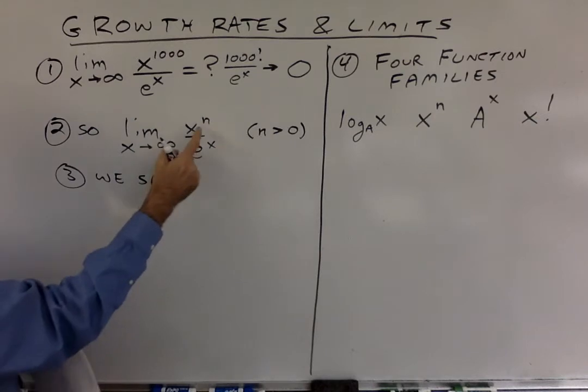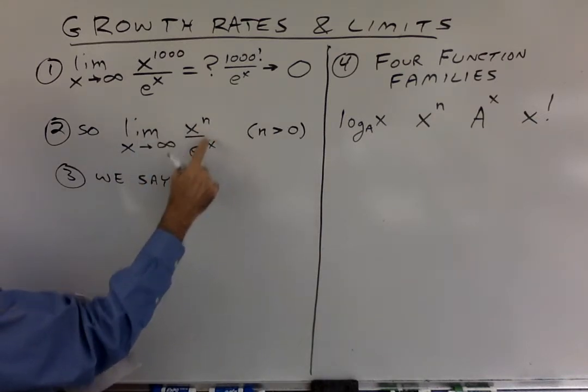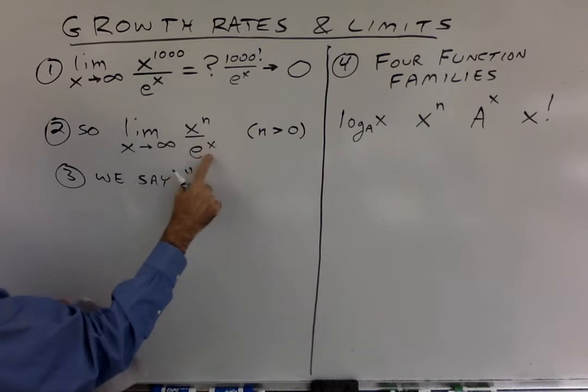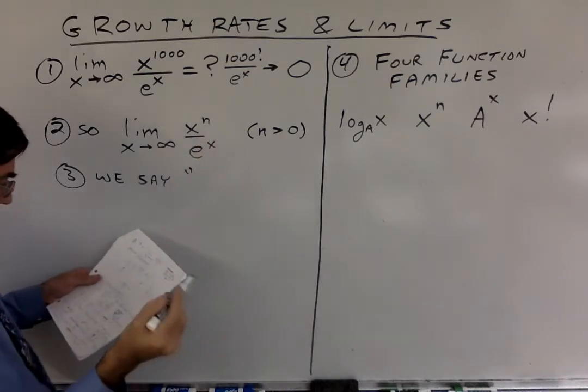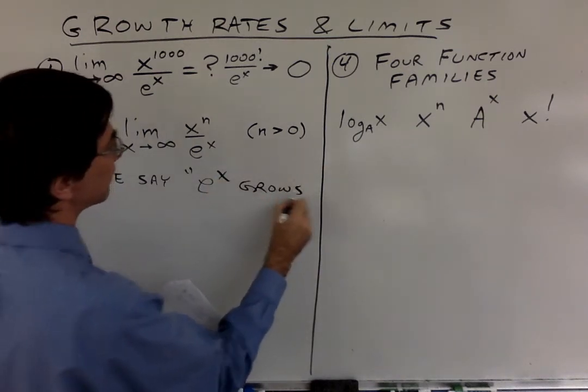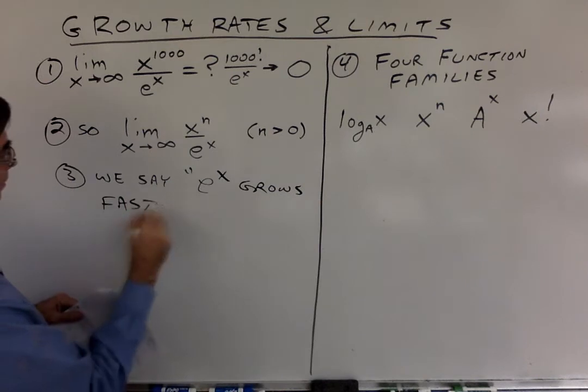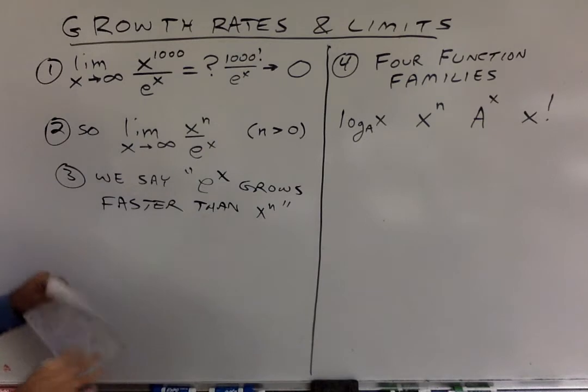So what we say is, by looking at the sequential derivatives of this, we can say that the bottom exponential function always grows faster than any power function you can put on top. So we say e to the x grows faster than x to the n. That's the way we talk about it. It has a faster growth rate.